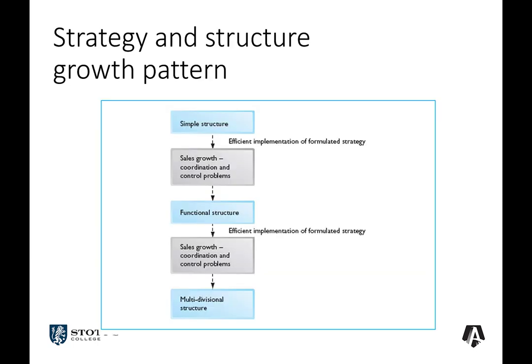Firms tend to start with a simple structure where all decisions are made by one or a small group of managers at the top across a broad range of areas. As their sales grow, they begin to get coordination and control problems, so they evolve their structure from that simple structure to a functional structure with specialists across different areas. As sales and coordination and control problems grow further, they may start to split their organization into a multidivisional structure, known as an M-form structure. A multidivisional structure can reflect a range of different structural divisional types.